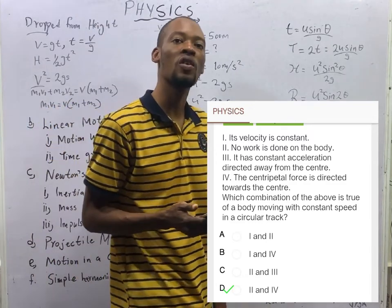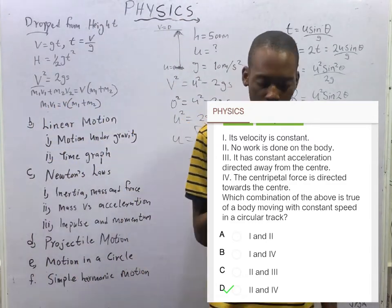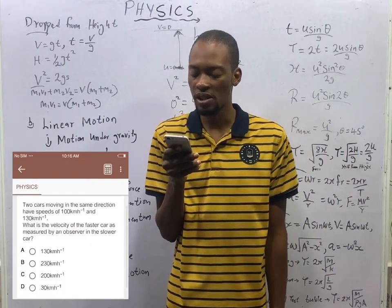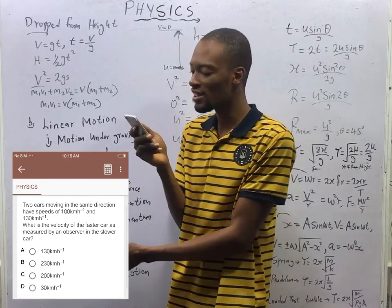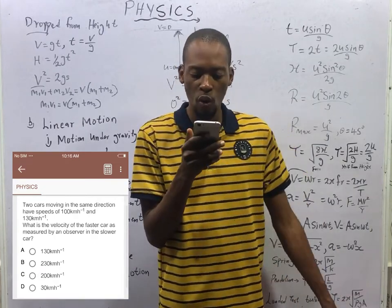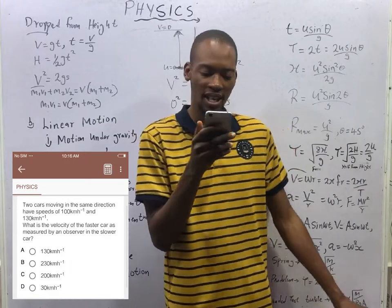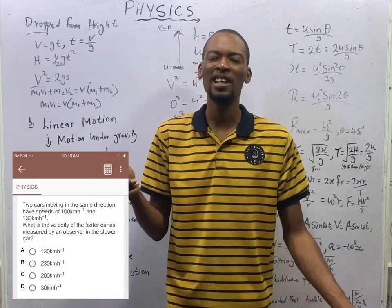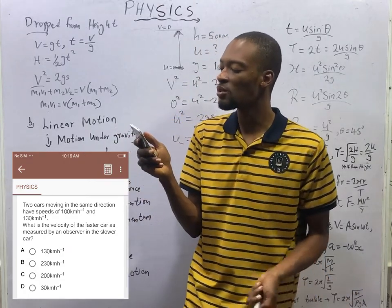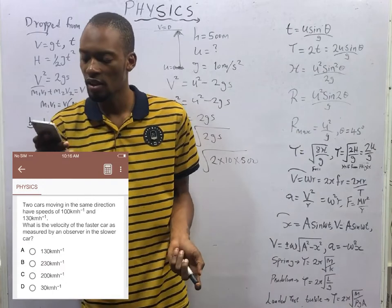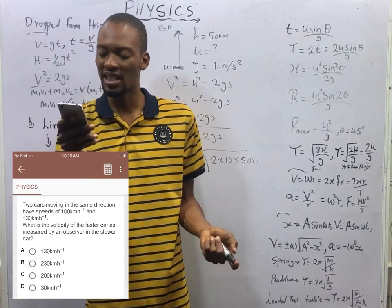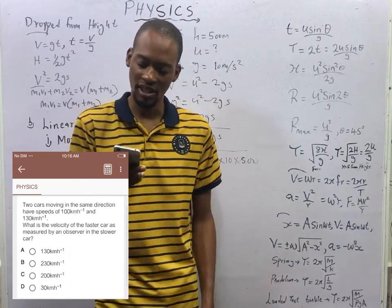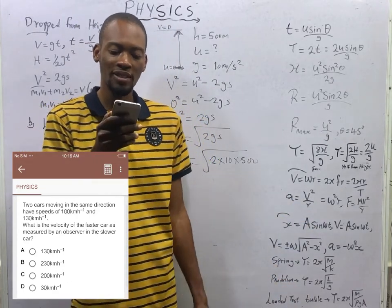Two cars moving in the same direction have speeds of 100 km/h and 130 km/h. What is the velocity of the faster car measured by an observer in the slower car? This is simply relative velocity: 130 minus 100 equals 30 km/h.